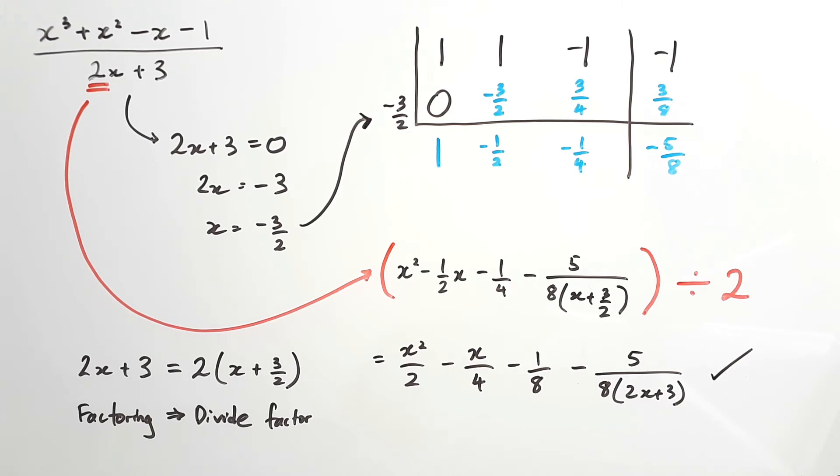So basically, you can use synthetic division when you're dividing non-monic expressions, it's just that you have to remember that when you have found your answer, you need to divide it by the number that's making it non-monic, and that'll fix everything.